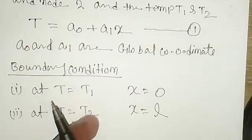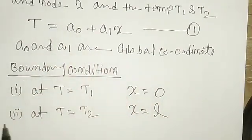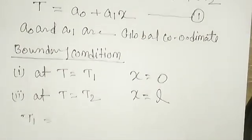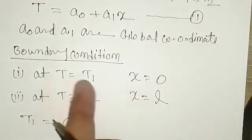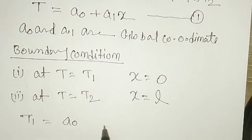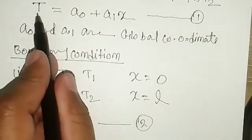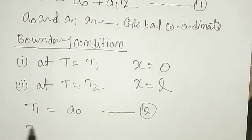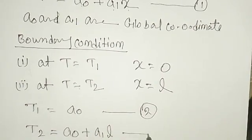Substituting these two boundary conditions into equation 1, we get two equations. For the first boundary condition, T equals T1 and x equals 0, so the A₁x term vanishes, giving T1 equals A₀ — this is equation 2. For the second boundary condition, T equals T2 and x equals L, giving T2 equals A₀ plus A₁L — this is equation 3.